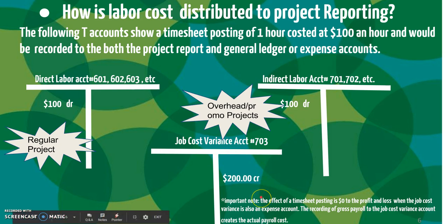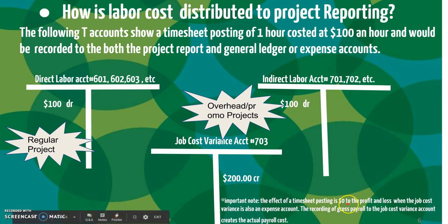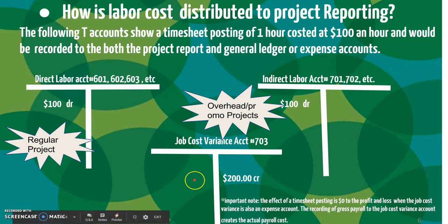It's really important to understand this theory. The effect of a timesheet posting is zero to the profit and loss — zero. There's no cost effect to your bottom line in your profit and loss when the job cost variance is an expense account, and in most cases it is. The recording of gross payroll to the job cost variance account actually creates the actual cost. When you record your payroll to this side of the entry, it will then create that actual matching of gross payroll to your payroll registers.